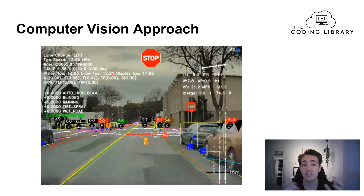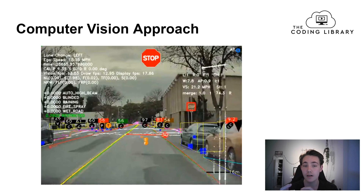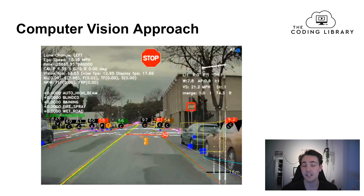Tesla is using computer vision as the main approach to solve full self-driving. They don't use any LiDAR or other sensors — only computer vision together with radar. Radar is used for some distance measurements and velocity predictions and estimations of other vehicles and objects.